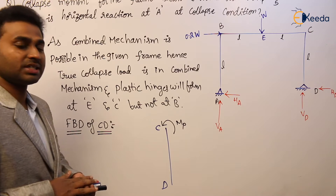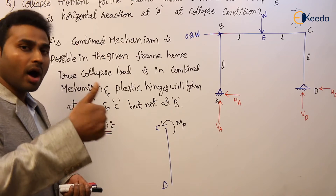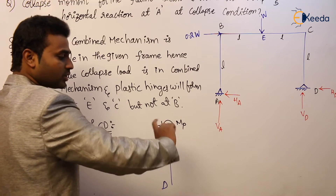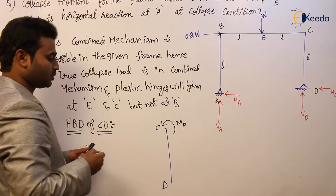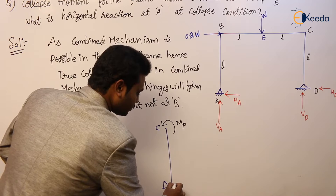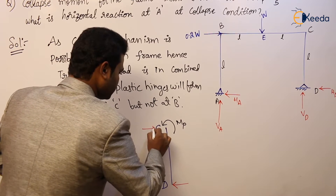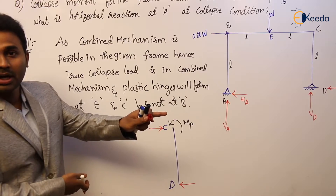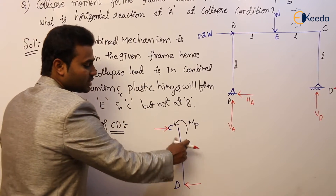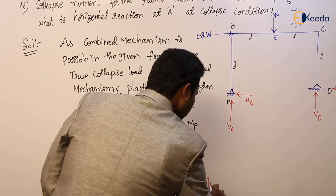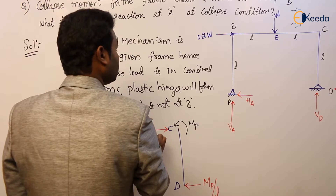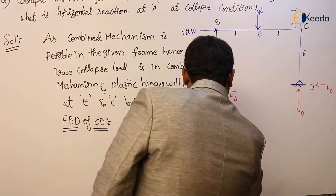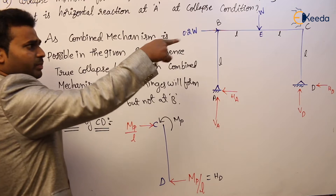Since an anti-clockwise moment of value MP is developing at C in segment CD, to resist that moment, the reaction should develop in the opposite, clockwise direction. These two equal and opposite forces acting at different points form a couple. The span is L, so the value of the couple is MP/L. This value equals HD, and it also represents the axial force in BC. Therefore HD = MP/L.